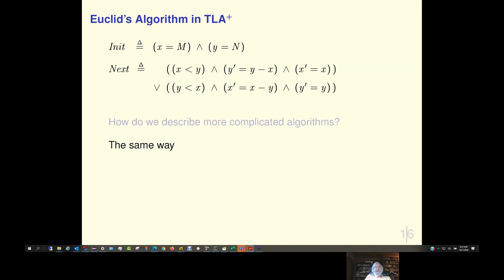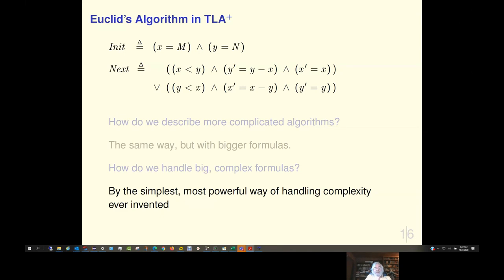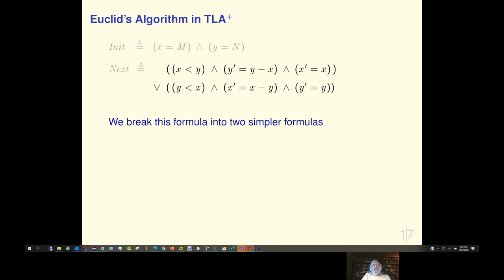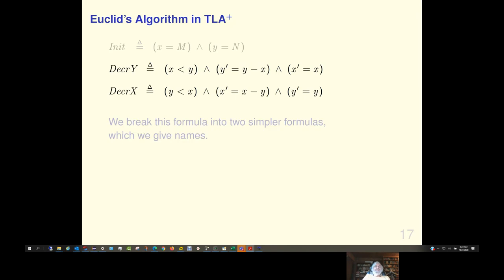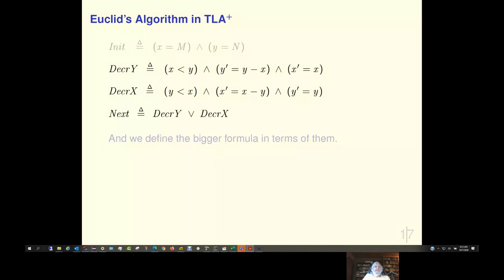But what about more complicated algorithms? They're described in exactly the same way, just with bigger formulas. Well, how do we handle big formulas? By the simplest and most powerful way of handling complexity that has ever been invented, the definition. We can break a big formula into smaller, simpler formulas. Even this simple formula, we can break into two still simpler formulas by giving names to these two parts. I'll call them decrement y and decrement x. And then, we define the bigger formula in terms of them. Next is just decrement x or decrement y.